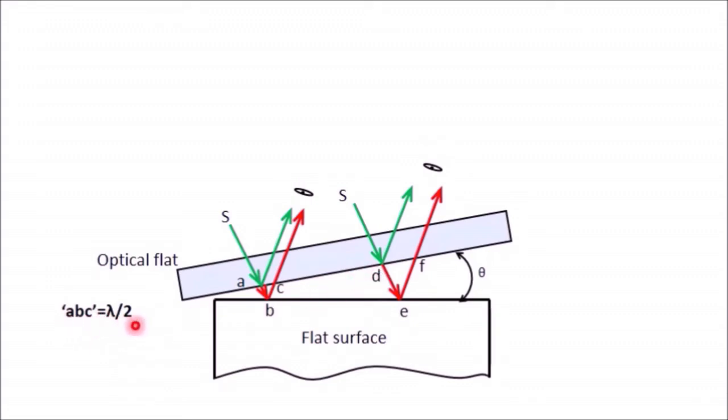Now suppose this DEF is equal to three lambda by two. Then in that case again you will get a similar fringe, a complete darkness or destructive interference.